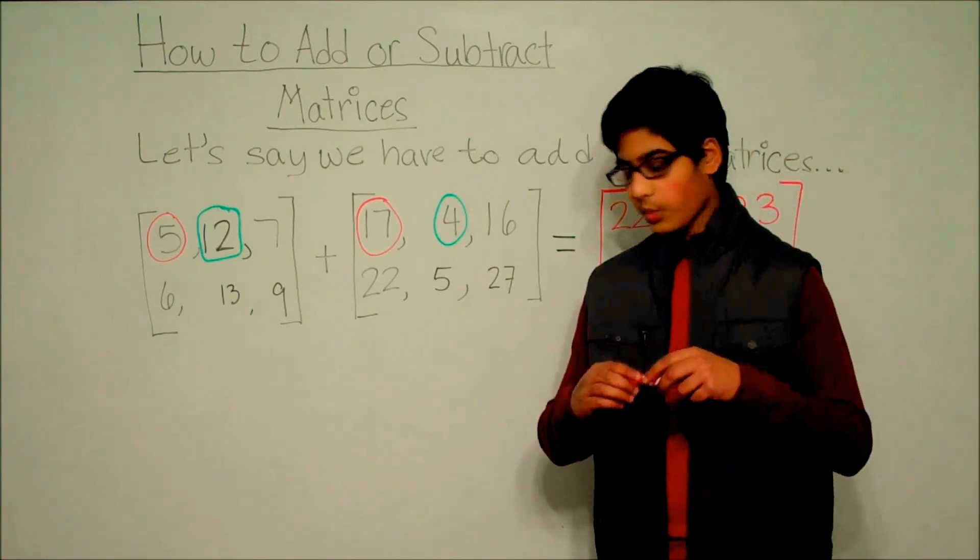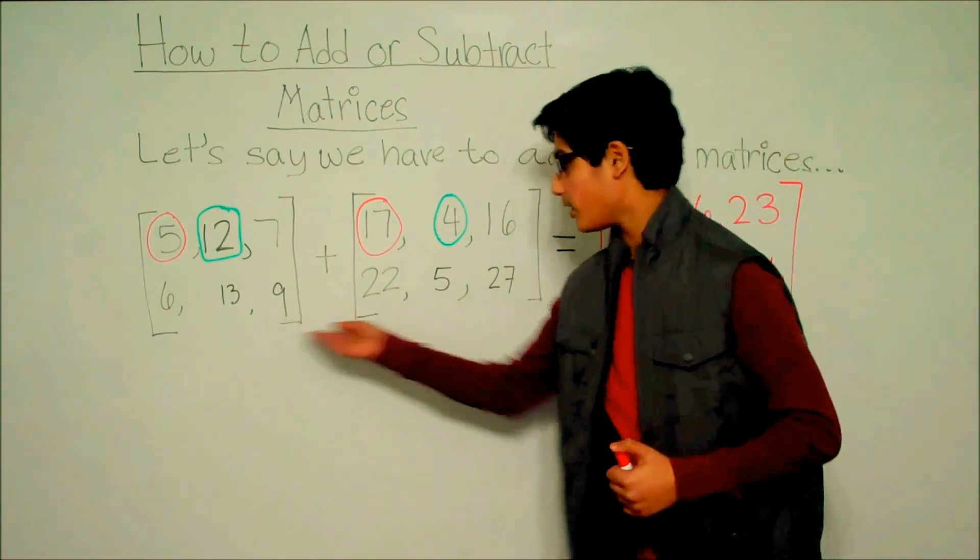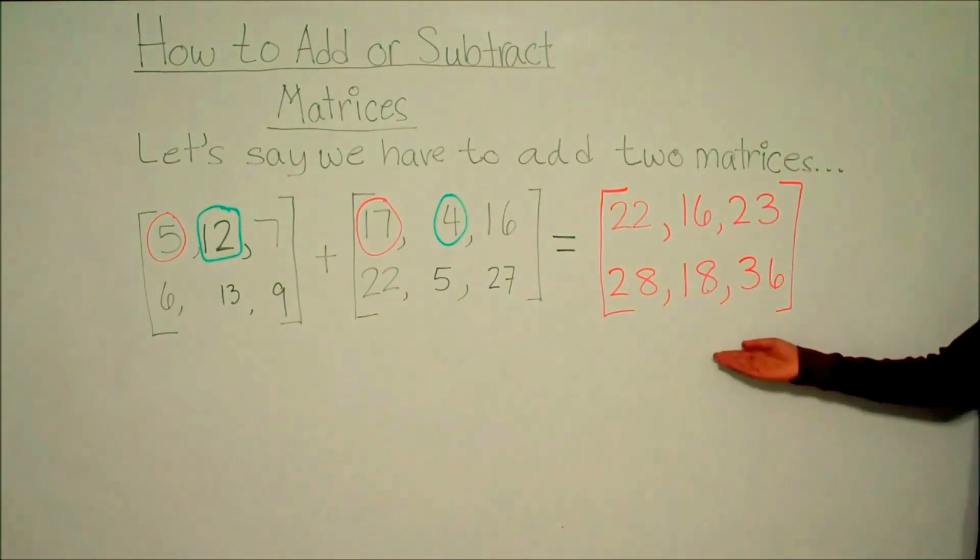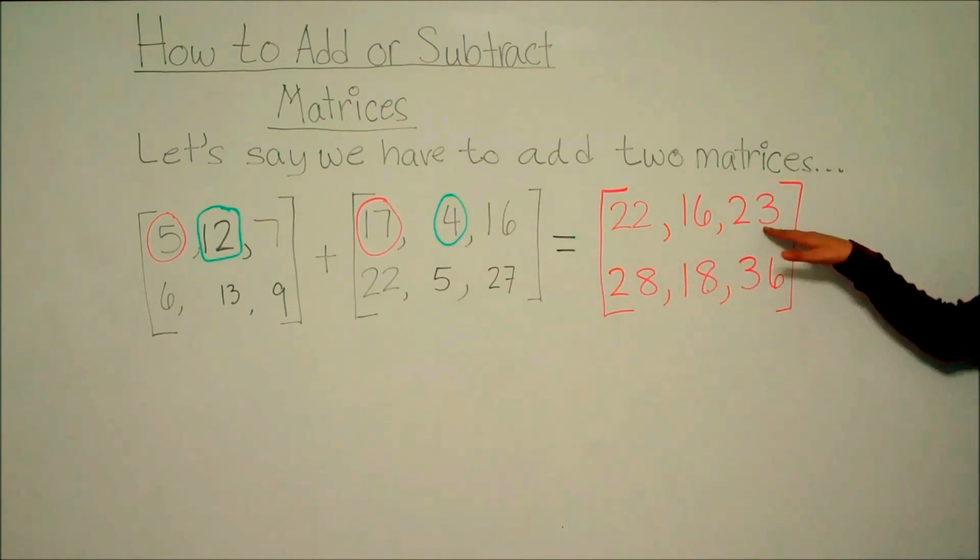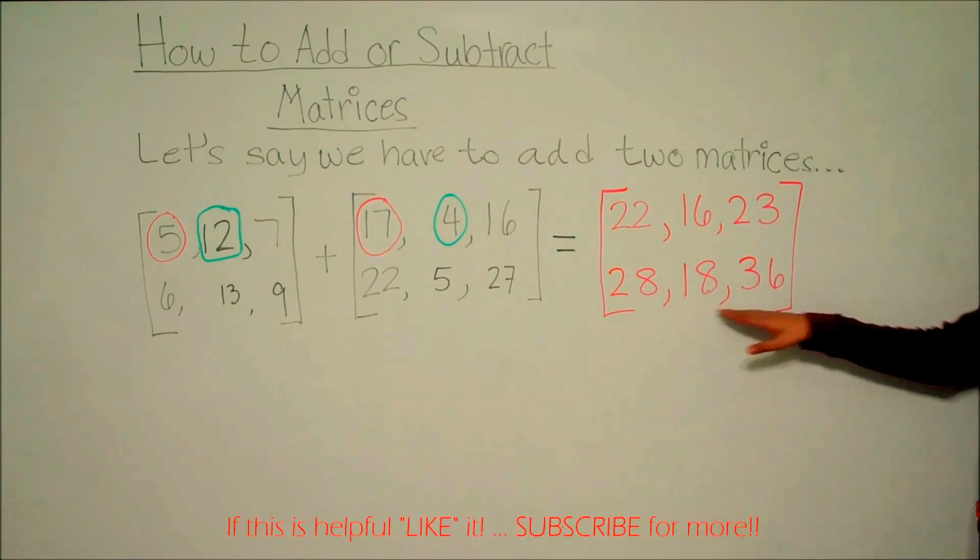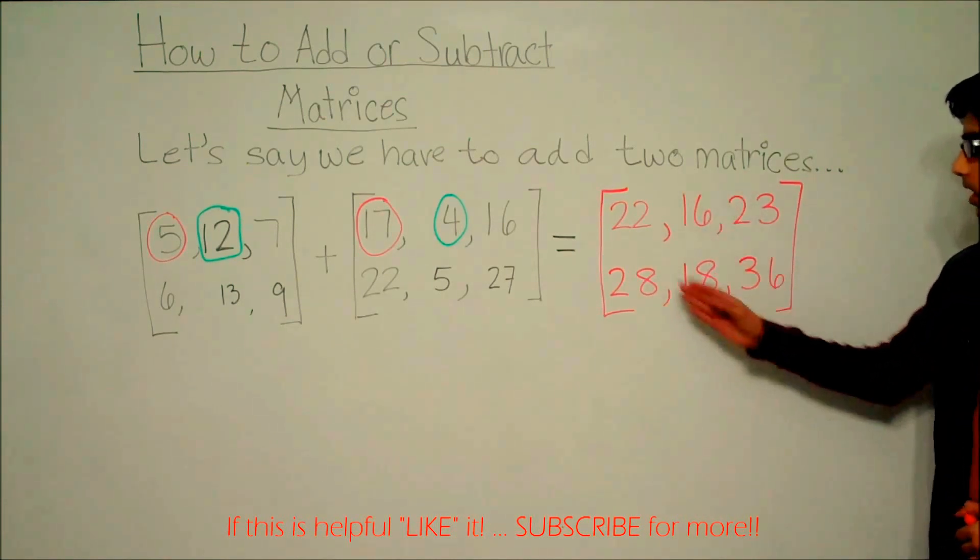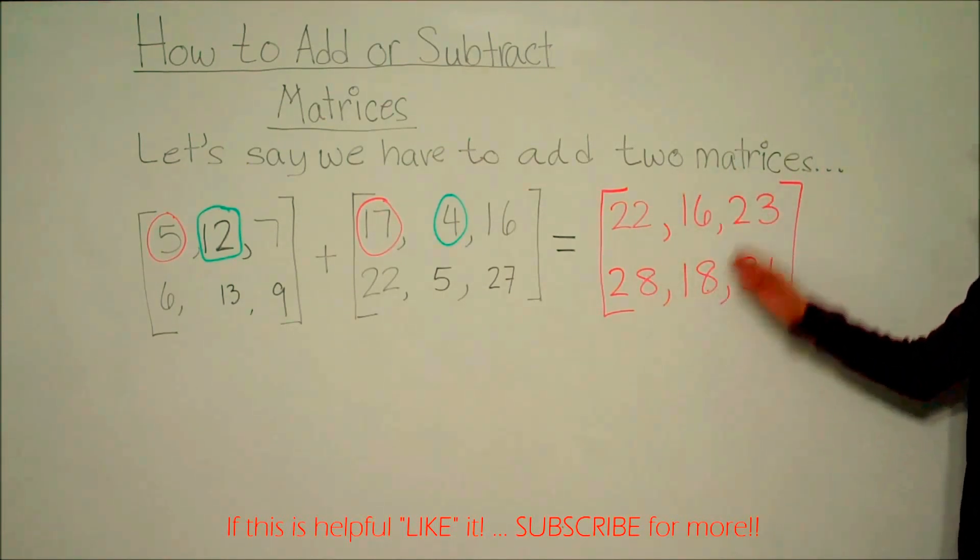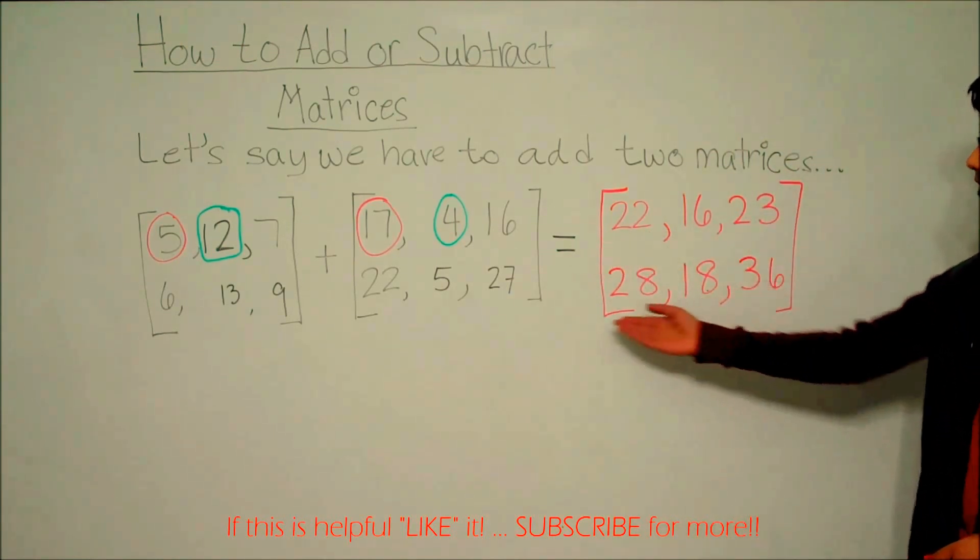So, we have just added these two matrices together. The sum of these two matrices is this matrix, which is 22, 16, 23, 28, 18, 36, and is in the format of three columns - column 1, column 2, column 3 - to two rows - row 1, row 2.